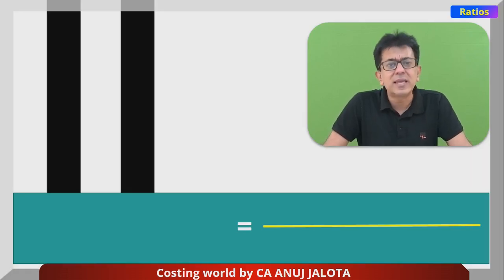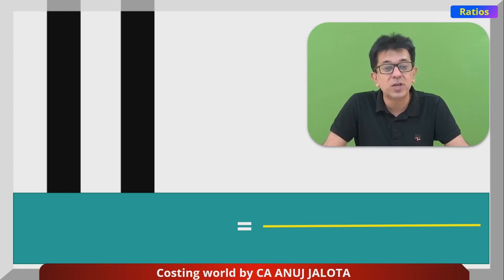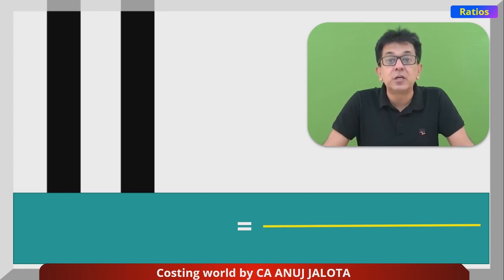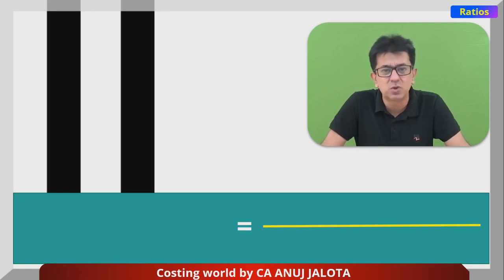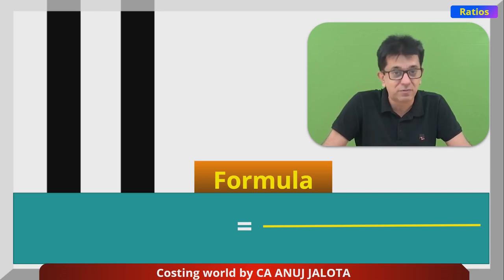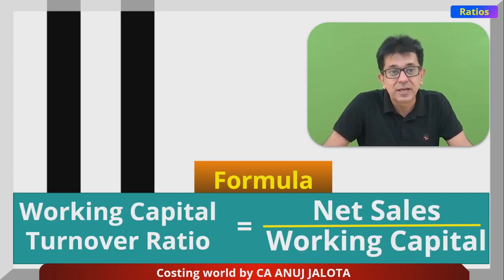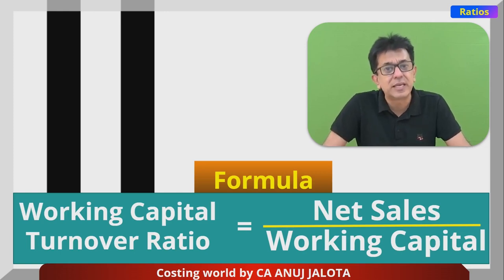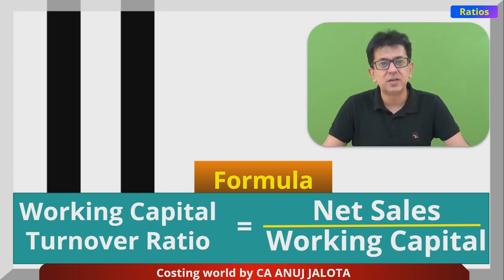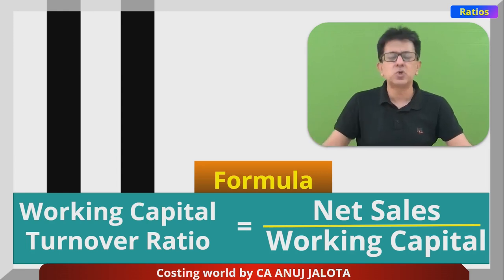Now, working capital turnover ratio: there has to be some ratio that tells you how efficiently you are using your funds to generate sales, and hence many kinds of turnover ratios exist — fixed assets turnover ratio, current asset turnover ratio, and working capital turnover ratio. Working capital turnover ratio is net sales upon average working capital, because net sales is for a full year, so the denominator should represent the entire year.